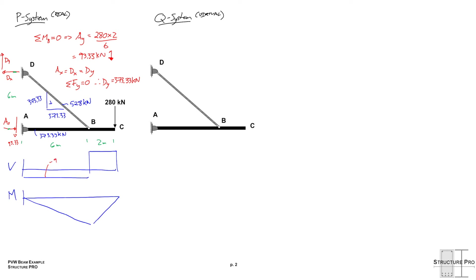We define two coordinate systems — X1 from the left and X2 from the right. The moment equation for the P system in coordinate system 1 is MP1 = −93.33·X1, and similarly for X2.